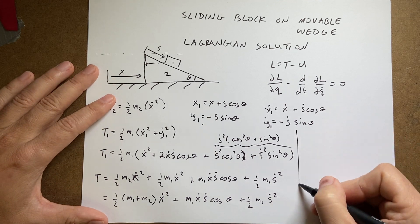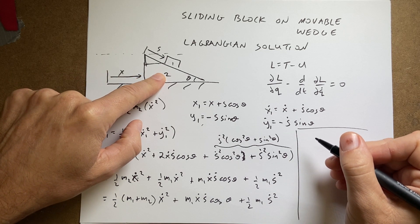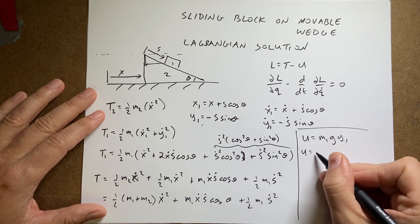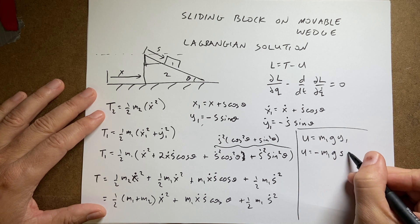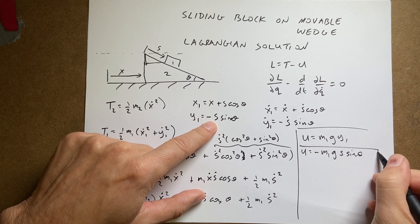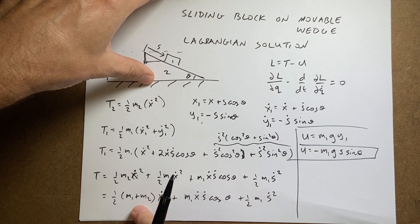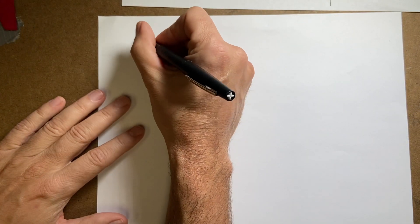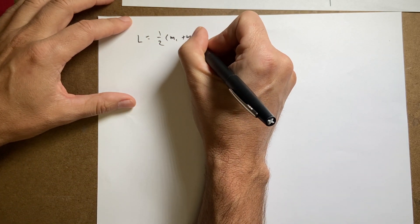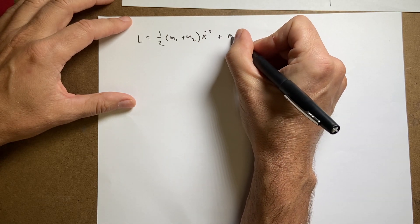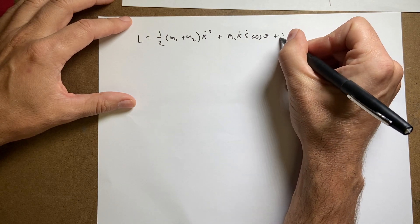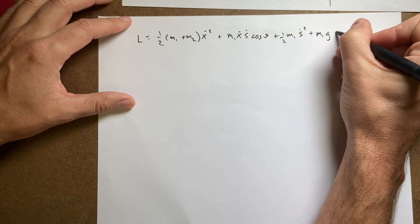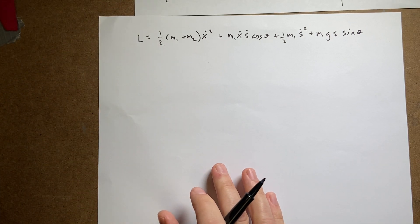Now the potential energy — the wedge doesn't move vertically so it has zero potential. The block's potential is U = m1·g·y1 = -m1·g·s·sinθ. So the Lagrangian L = T - U is: L = one-half(m1 + m2)ẋ² + m1·ẋṡcosθ + one-half m1·ṡ² + m1·g·s·sinθ.